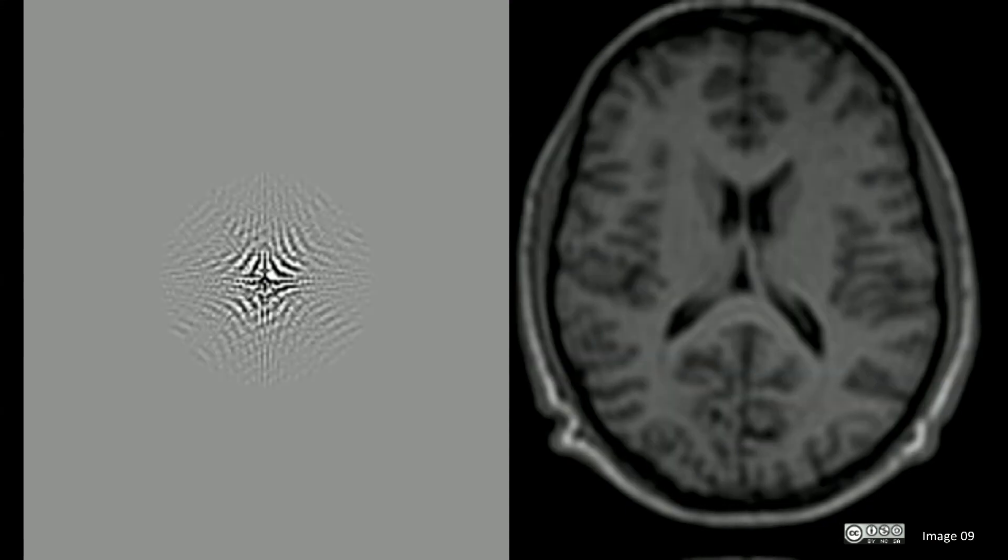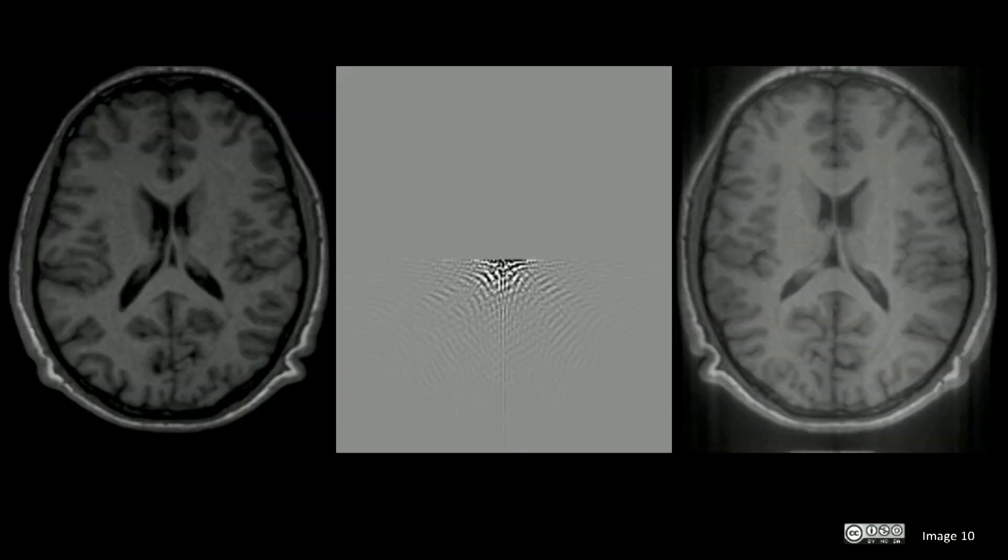Another technique that is often used to increase speed of an acquisition is to acquire only half of the k-space data and then mirror this to the other side. This image shows how this will affect the acquired image on the right hand side.